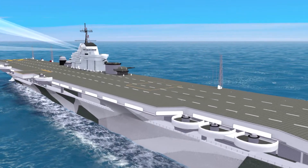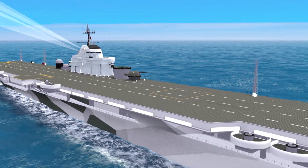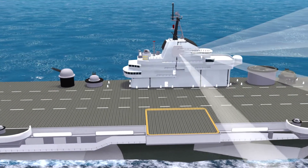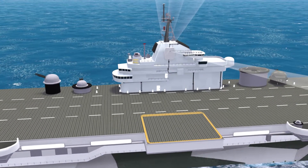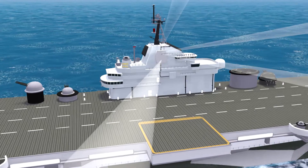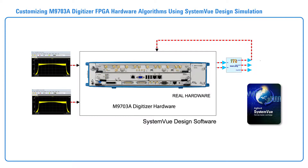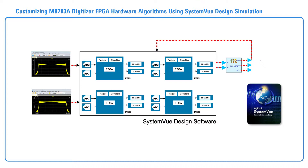Active electronically scanned array systems require precise amplitude and phase control to steer their beams. These complex systems require new design-to-test methodologies to help ensure system performance. In this video, we will show a new design-to-test methodology to customize the FPGAs in the M9703 Multi-Channel Digitizer using SystemVue design software. The FPGAs will be used to correct the channel-to-channel amplitude and phase versus frequency using an LFM Chirp radar stimulus.